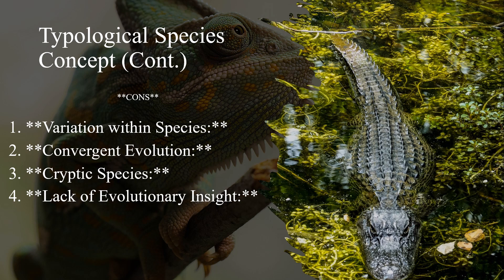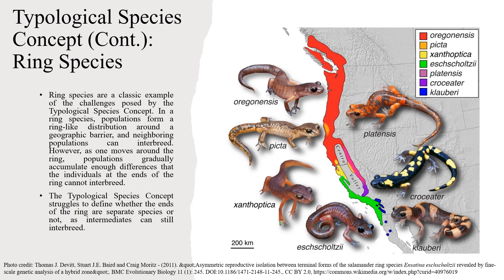But this concept comes with its disadvantages as well. When dealing with variation within a species, convergent evolution, cryptic species, or lack of evolutionary insight, these are just some of the limitations of using the morphological or typological species concept. Ring species are a classic example of the challenges posed by this concept.